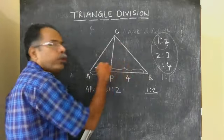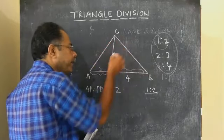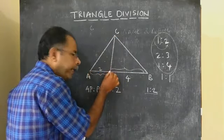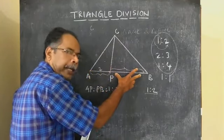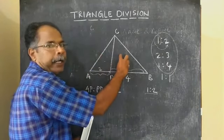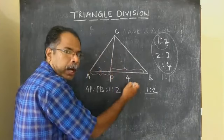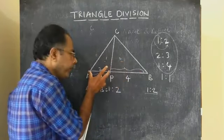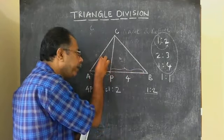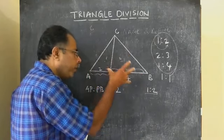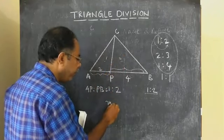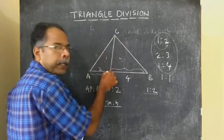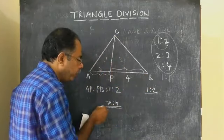The line CP divides triangle ABC into two triangles. If AP to PB is equal to m is to n, then the area of triangle APC to the area of triangle BPC is equal to m is to n.